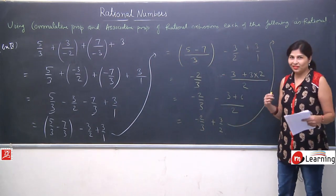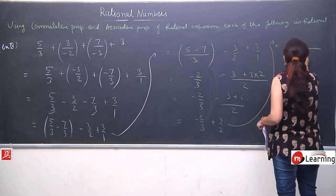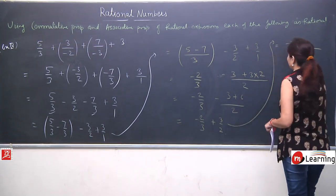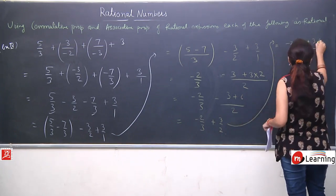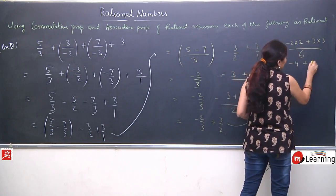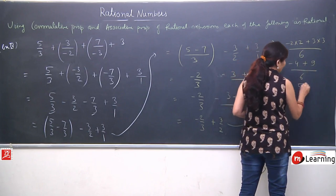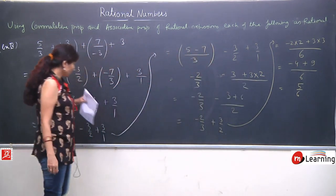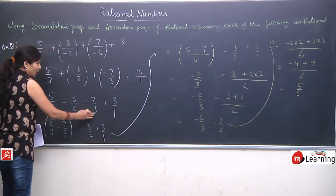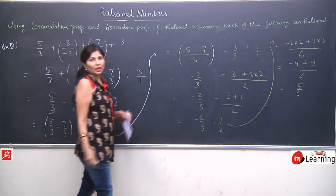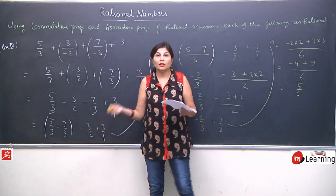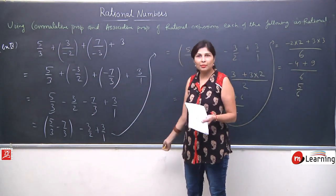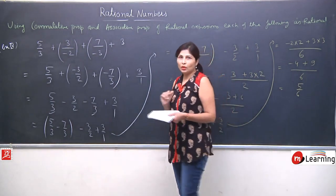Now we again have different denominators, so we take LCM of 3 and 2 which is always 6. 2×3 = 6 gives 2 in the numerator from −2/3, and 3×3 = 9 from 3/2 side: −4 + 9 upon 6 = 5/6. So the final answer is 5/6. The question took 3 steps because one set of denominators was the same so we collected those terms, but the remaining denominators were different and needed further LCM steps.